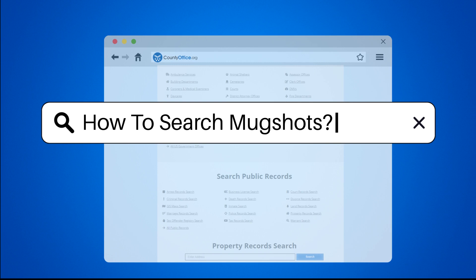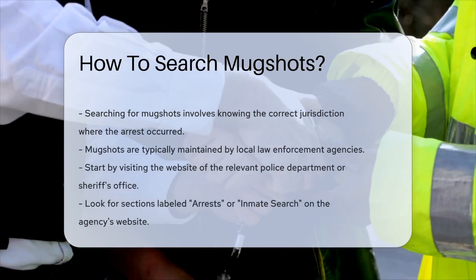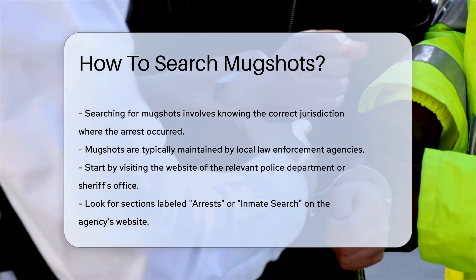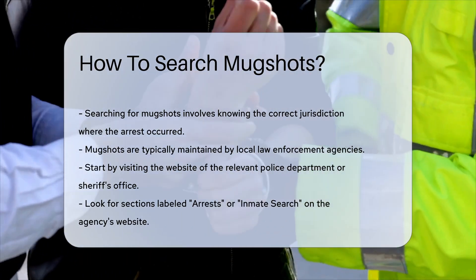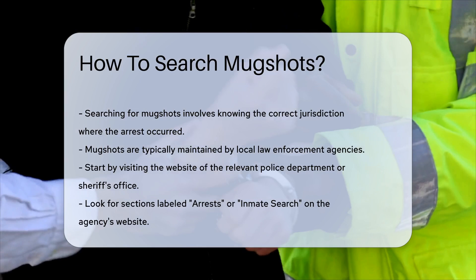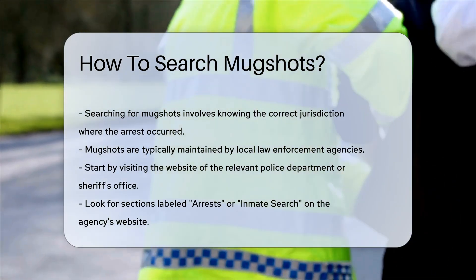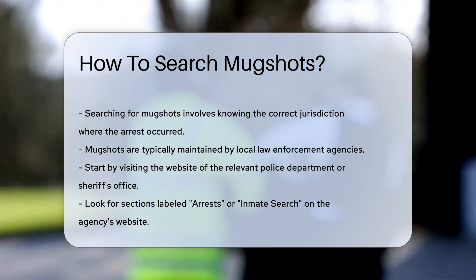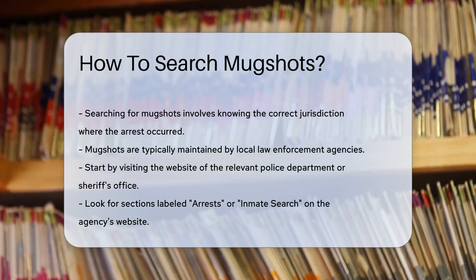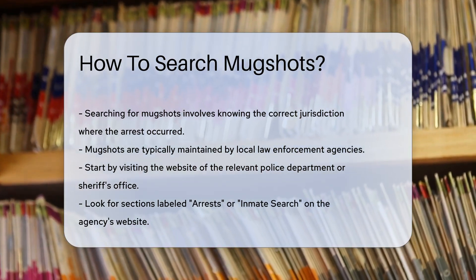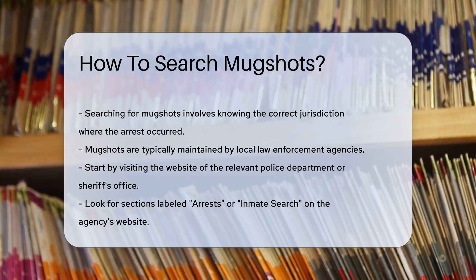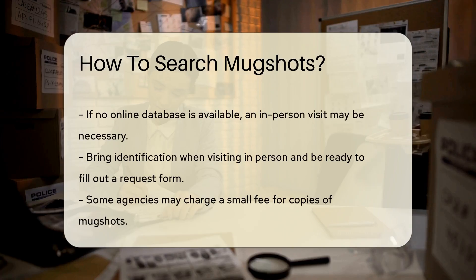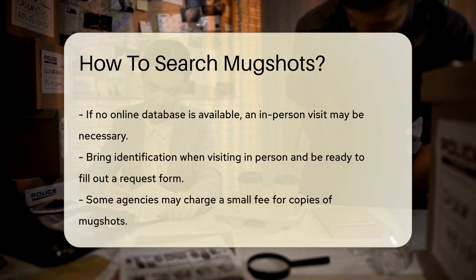Searching for mugshots can be straightforward if you know where to look. Start by identifying the correct jurisdiction. Mugshots are typically maintained by local law enforcement agencies. Visit the website of the police department or sheriff's office in the area where the arrest occurred. Many agencies provide online databases for public access. Look for sections labeled Arrests or Inmate Search.